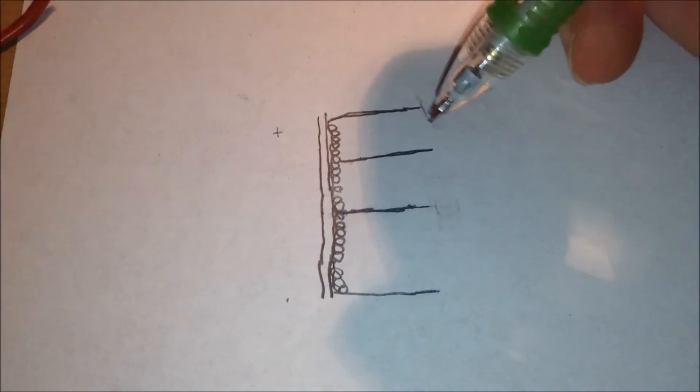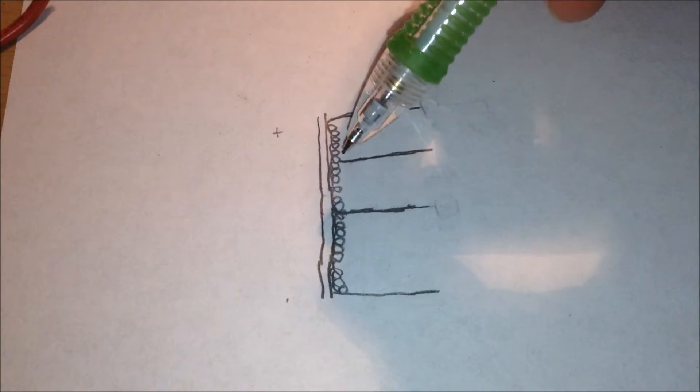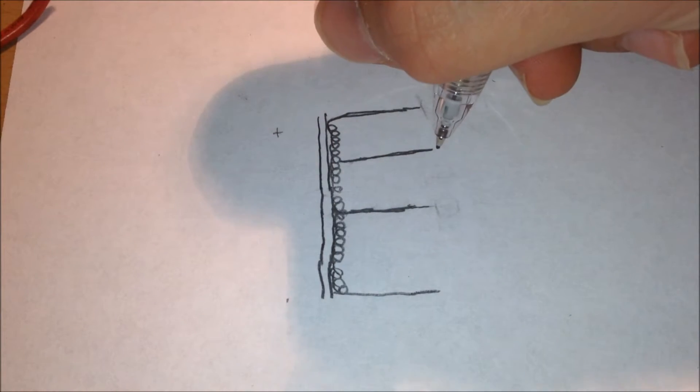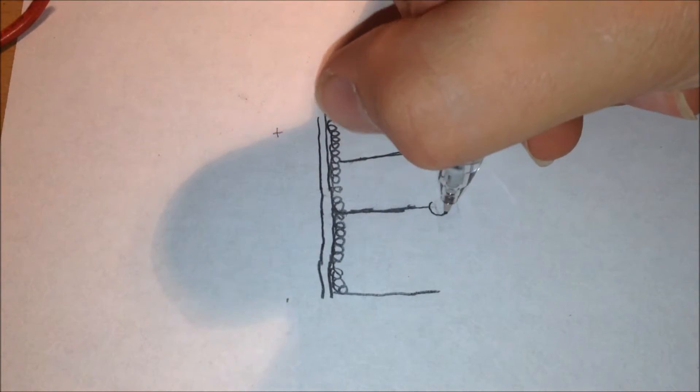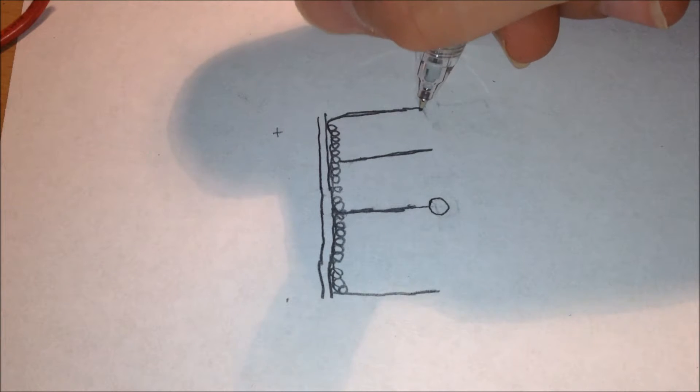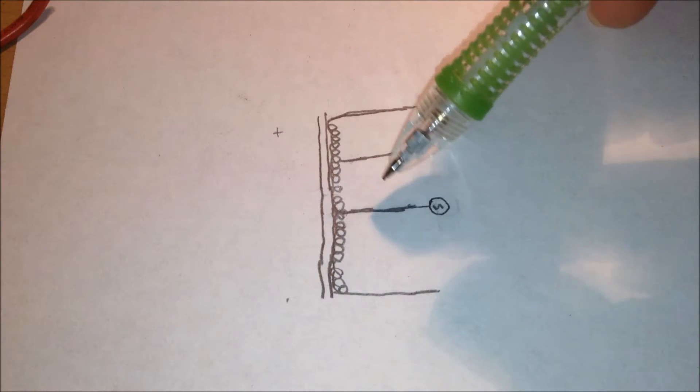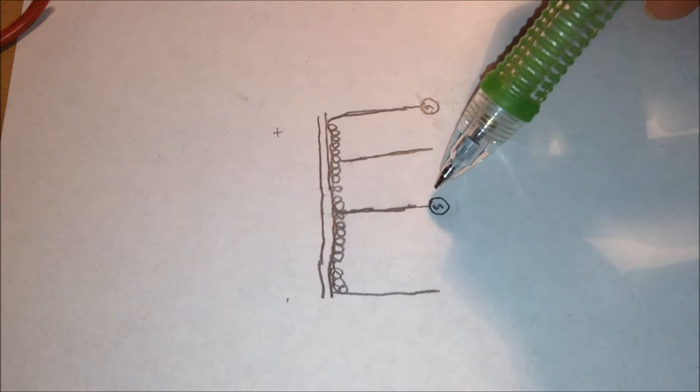Okay, so now how an autotransformer works. Let's start with this theoretical example of a transformer. If you apply an AC voltage to this tap and to this end of the coil and apply 100 volts AC to them,